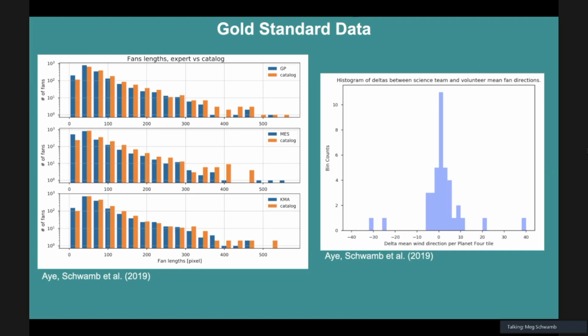The highlight and point of this, and the paper goes through into way more detail, is that the catalog is just as good as us on the science team marking this, and they got it done way faster. It took months to get even just 200 images, and we have thousands of images on the site that people are analyzing.